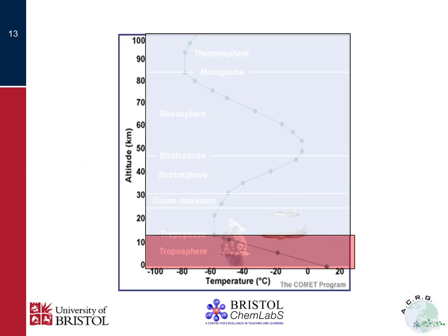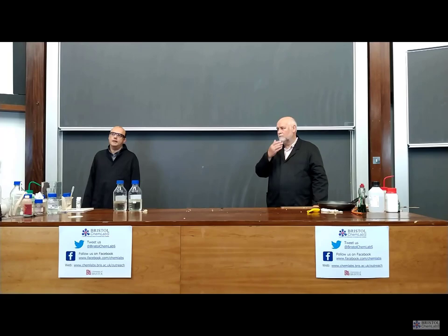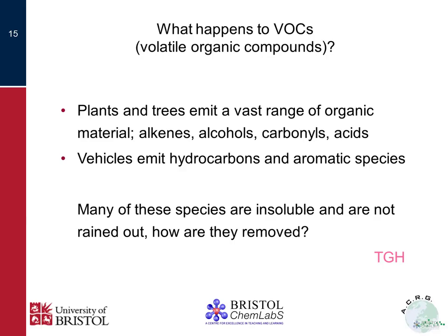For the rest of this talk, let's focus on the lowest part of the atmosphere - the lowest ten kilometres, known as the troposphere, and in particular the lowest kilometres, something called the boundary layer. We're going to think about the chemicals released into this region: volatile organic compounds and a whole load of nitrogen oxides - NO and NO2 - released from combustion. It's not just human activity that releases chemicals into our atmosphere; plants and other naturally occurring systems release a whole cocktail of chemicals too.